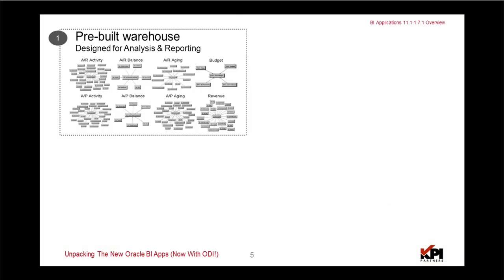So what is Oracle BI Applications? Oracle BI Applications is a pre-built solution for a variety of CRM and ERP applications like financials, order management, supply chain, procurement and spend, human resources, etc. It is built on a suite of tools which involves ETL or ELT, and primarily based on the Oracle BI Enterprise Edition reporting tool set with several other components. It contains a pre-built warehouse, and for financials it comes with pre-built 16 different star schemas and the metadata designed for analysis and reporting.